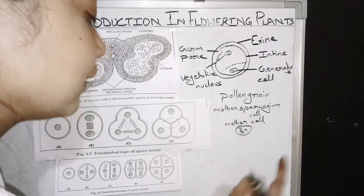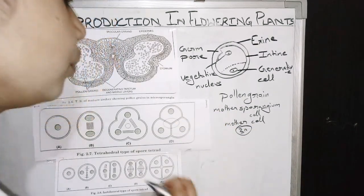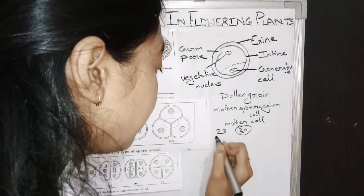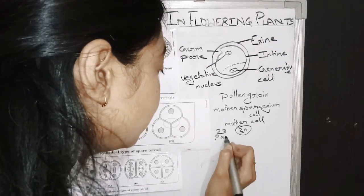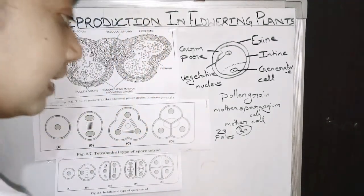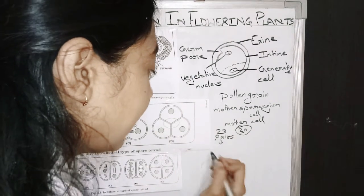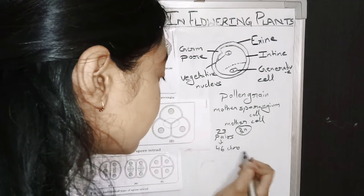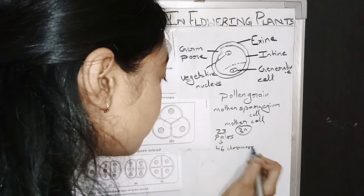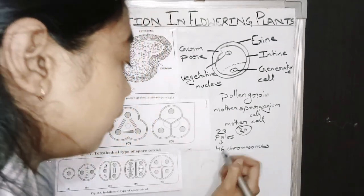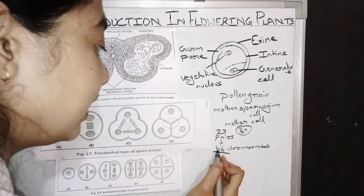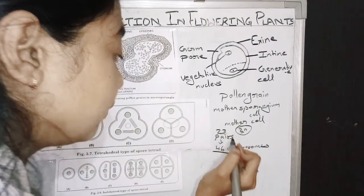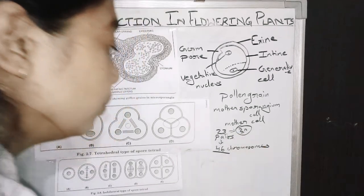This mother cell is 2N. I have told you 2N means number of chromosomes — two sets of chromosomes are present. Once two sets of chromosomes are present — how many? 23 pairs. You can say 23 pairs, and in number I can conclude it as 46 chromosomes. So we can write it as 23 pairs and as 2N.